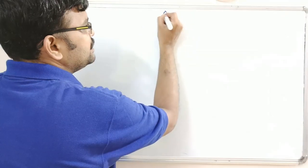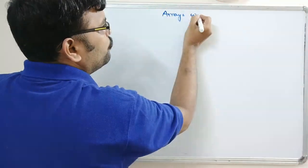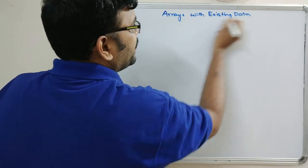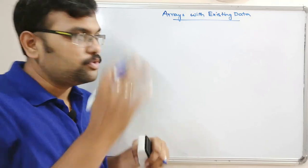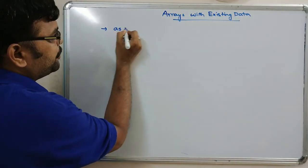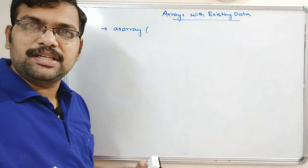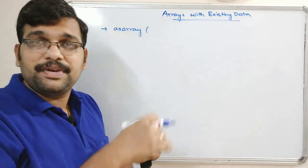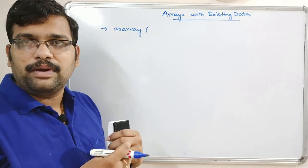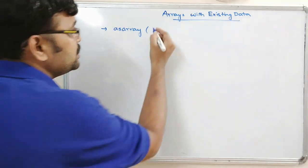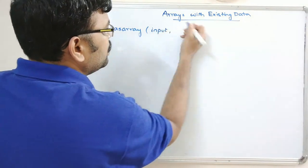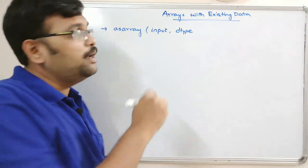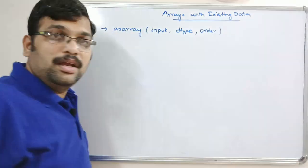We are looking at three functions for creating arrays with existing data. That means already some data will be there, and we will convert that data into an n-dimensional array of the required data type. The first function is `as_array`, which takes three arguments: the input, the data type, and the order.